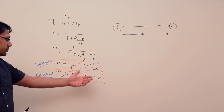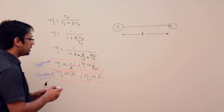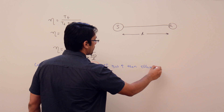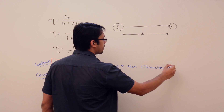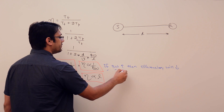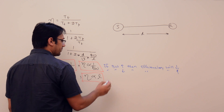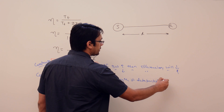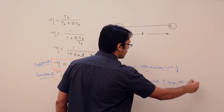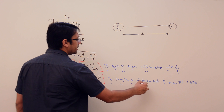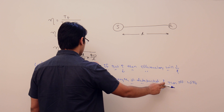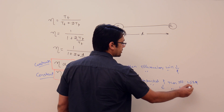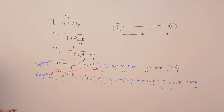Now discussing bandwidth: if bandwidth will increase, then efficiency will increase. If bandwidth will decrease, then efficiency will decrease. Similarly, if the length of the data packet increases, then efficiency will increase, because efficiency is directly proportional to packet length.